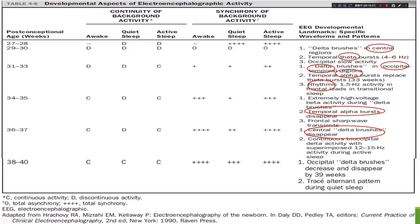Delta brushes are most abundant during 32 to 36 weeks of conceptional age. Temporal theta bursts gradually become temporal alpha bursts. By 36 weeks, patterns become more continuous in awake and active sleep states. By full term, all sleep stages show continuous patterns with gradually increasing synchrony, and occipital delta brushes decrease and disappear by 39 weeks gestational age.